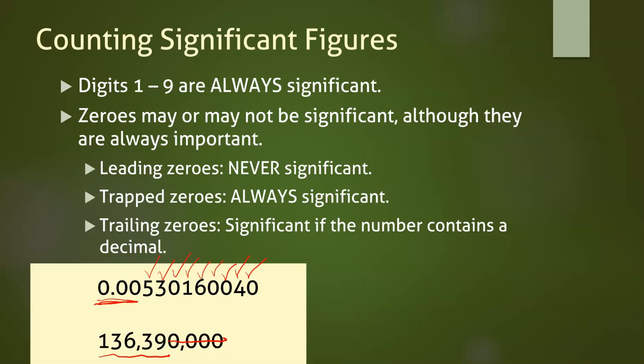Adding a decimal to the end would give this number nine sig figs, so if you needed to write it with six, seven, or eight sig figs, you would have to use scientific notation.